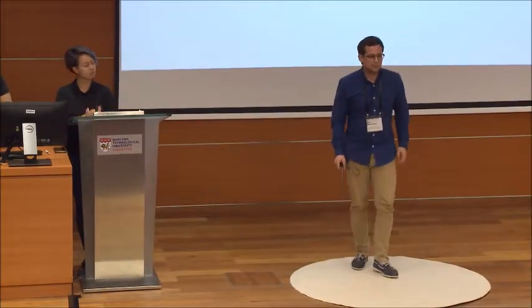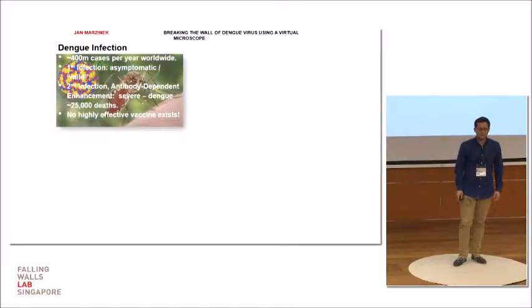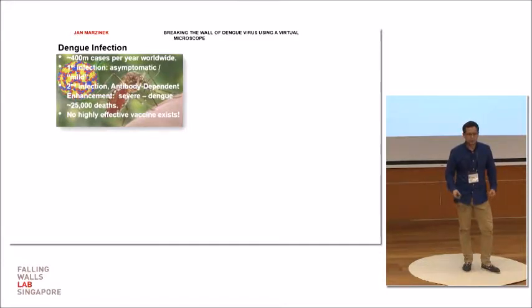Dengue virus is causing approximately 400 million cases a year. During the first infections, in the worst case scenario, you can get mild dengue fever. However, during the second infection with a different serotype, our immune system wrongly recognizes the virus and this can lead to severe dengue and dengue hemorrhagic fever.